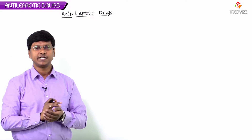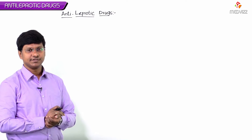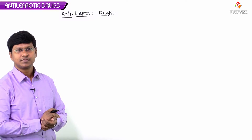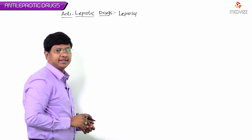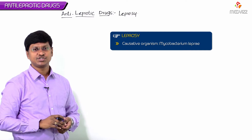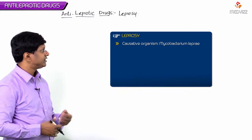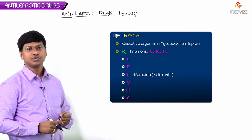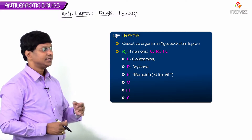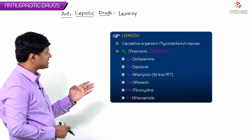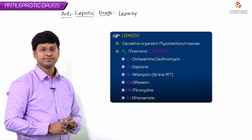In continuation of the anti-mycobacterial drugs, let me take up the treatment of leprosy — that is, antileprotic drugs. Leprosy is the disease caused by Mycobacterium leprae. The drugs used in the treatment of leprosy include rifampicin, which is also a first-line anti-tubercular drug, along with dapsone, clofazamine, ethionamide, ofloxacin, minocycline, and clarithromycin.